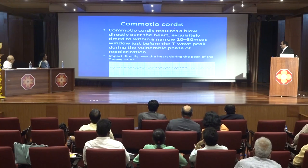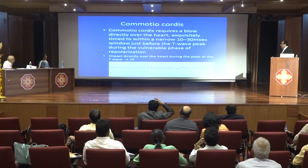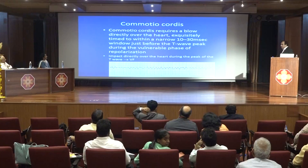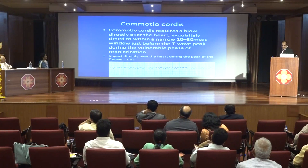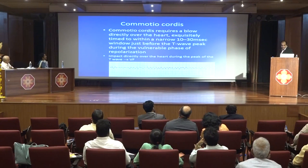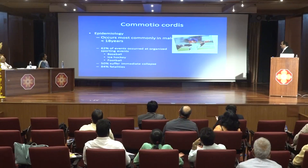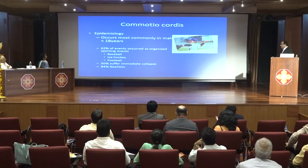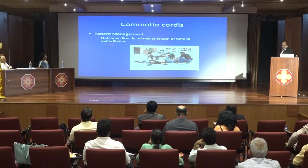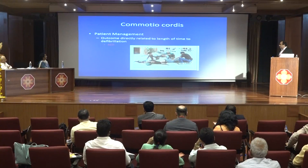Commotio cordis is also an important cause in adolescent sudden cardiac death. It requires a blow directly over the chest timed within a narrow window of 10 to 30 milliseconds prior to the peak of the T-wave, during the vulnerable phase of repolarization, causing ventricular fibrillation. It occurs mostly in those under 18 years; 62% of events occur during sports like football, baseball, or ice hockey. Fatality is greater than 84% even with AED availability, and survival is directly related to time to defibrillation.